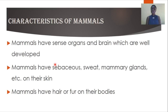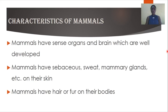Mammals also have sebaceous, sweat, and mammary glands. The sebaceous glands are fat-secreting glands that moisturize your hair follicles and skin — that is why you sometimes have oil on your skin. Sweat glands are very important for excretion, ensuring that excretion occurs effectively in mammals.